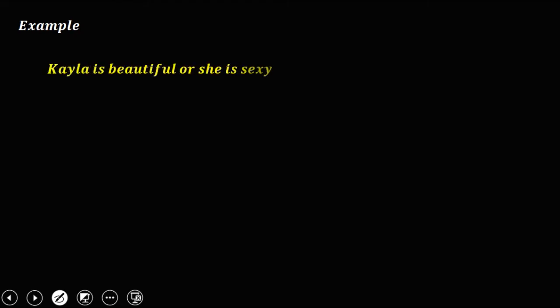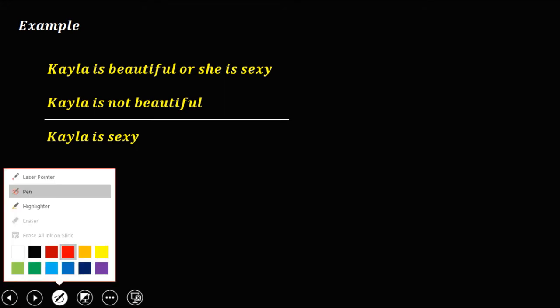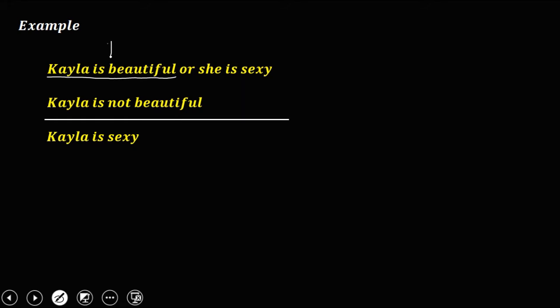Let's have this example: Kyla is beautiful or she is sexy. Kyla is not beautiful. Therefore, Kyla is sexy. We need to identify if this argument is valid or invalid. First, convert to symbolic form. 'Kyla is beautiful' is P. The connector 'or' is a disjunction. 'She is sexy' is Q. 'Kyla is not beautiful' — since 'Kyla is beautiful' is P — 'not beautiful' is ¬P, the negation of P. 'Kyla is sexy' is Q.